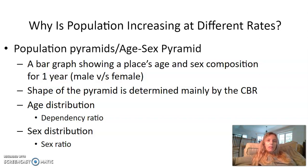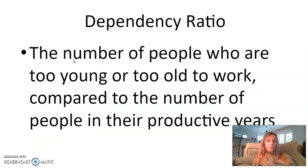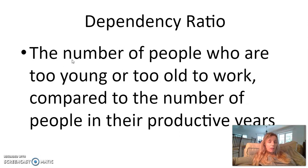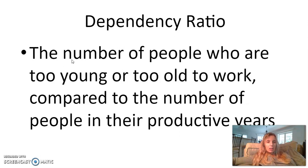Your age dependency distribution is your dependency ratio, and your sex distribution is your sex ratio. The dependency ratio is the number of people who are too young or too old to work in your population compared to the number of people in their productive years — the workers. So it's dependents compared to the working-age people of your population.